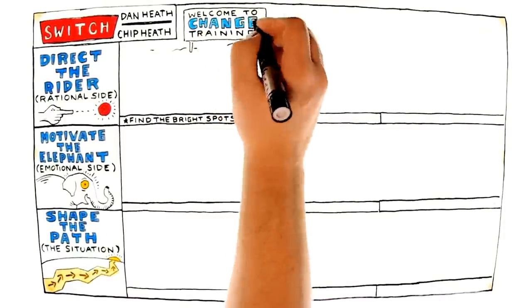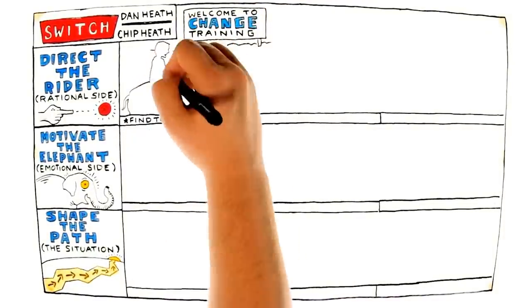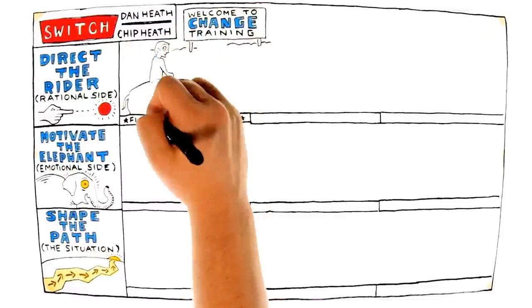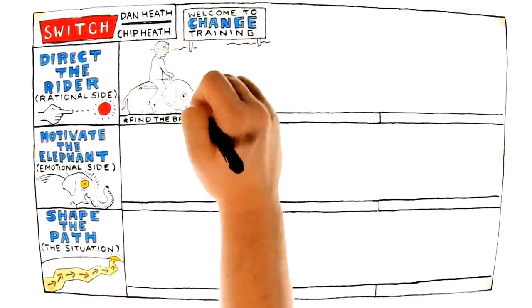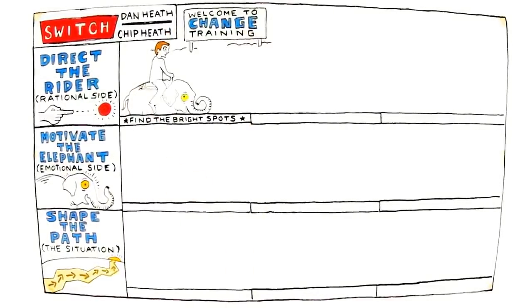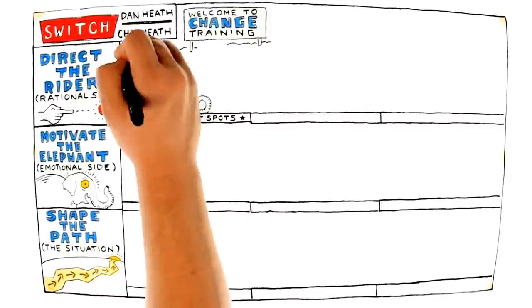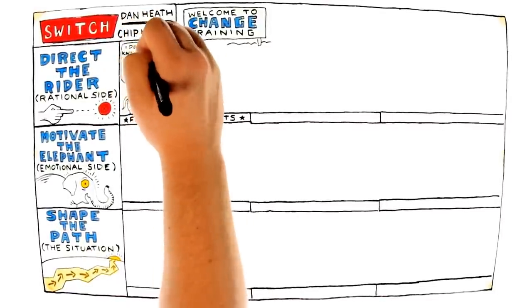His analysis almost always looks at problems rather than bright spots. This leads to analysis paralysis. To make progress on a change, you need ways to direct the rider.